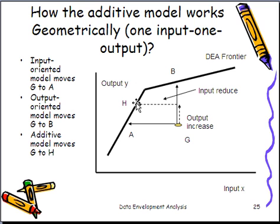Now, depending on the specific examples or cases you work on, you're not necessarily going to increase the output by this amount. It depends on the particular situation. So this picture basically shows the difference between the additive model and the input-oriented model and the output-oriented model. And this is how the additive model works.